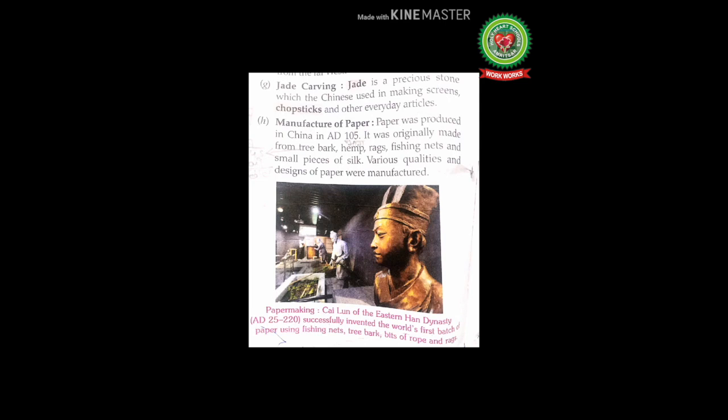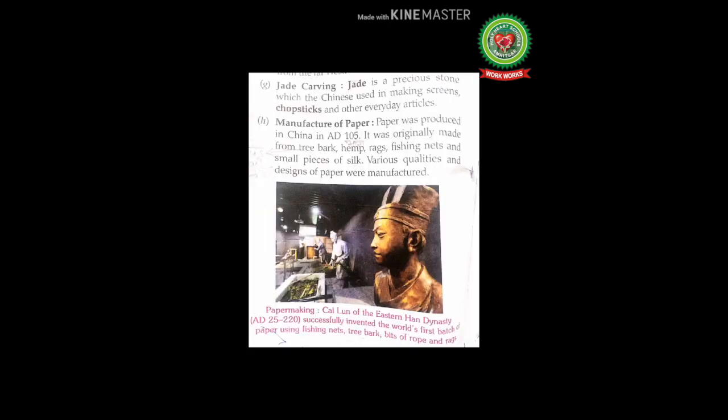The next occupation is manufacture of paper. Paper was produced in China in AD 105. It was originally made from tree bark, hemp, rags, fishing nets, and small pieces of silk. Various qualities and designs of paper were manufactured. The figure in your book shows Cai Lun of the Eastern Han Dynasty, who invented the world's first batch of paper using fishing nets, tree bark, bits of rope, and rags.